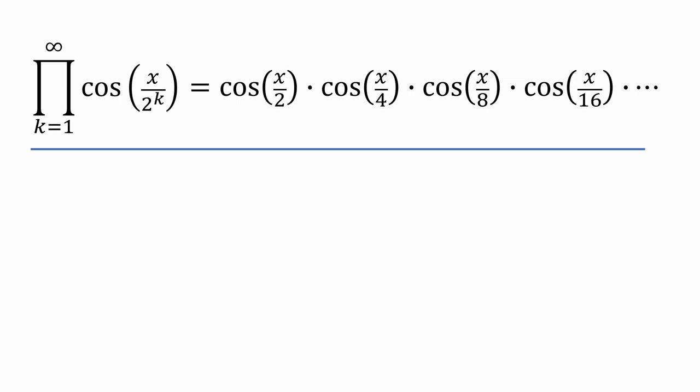We need to employ a trig identity to crack it. Let's try the double angle formula for sine. We'll make the following substitution for theta and plug that into sine 2 theta to get the following. And now that simplifies a tiny bit to get us this.